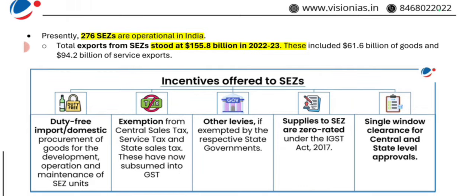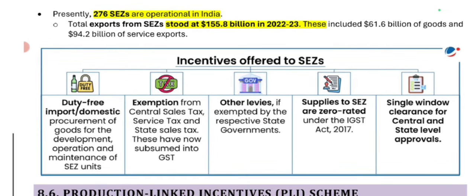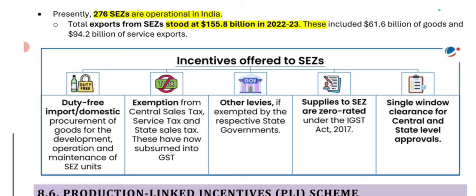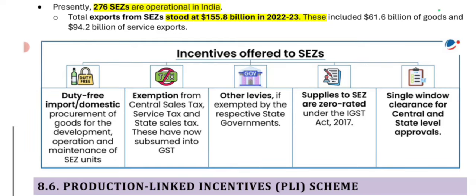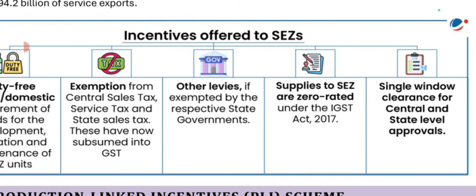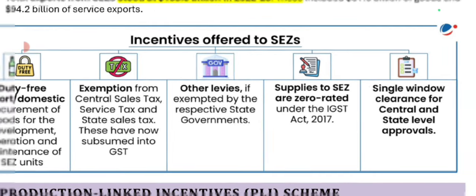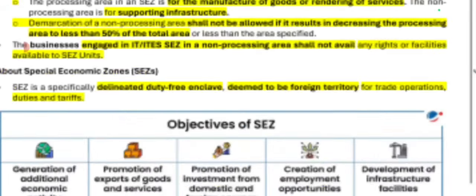SEZ exports reached $18 billion in 2022-23. Incentives offered include duty-free imports and domestic procurement, exemption from central sales tax, service tax, and state sales tax, zero-rated supplies under GST, and single window clearance for central and state level approvals.